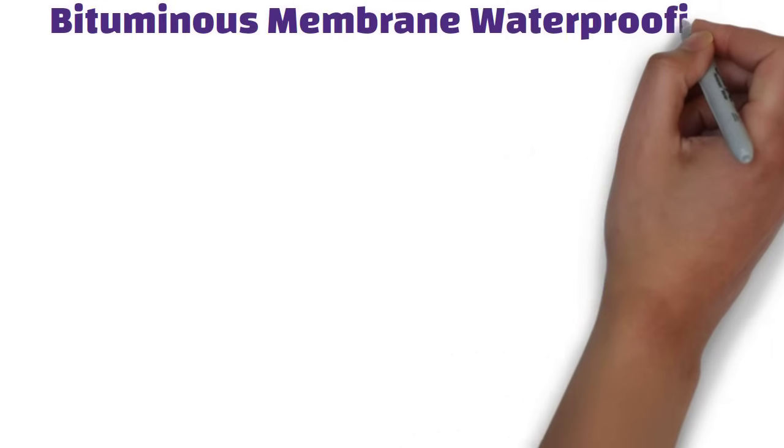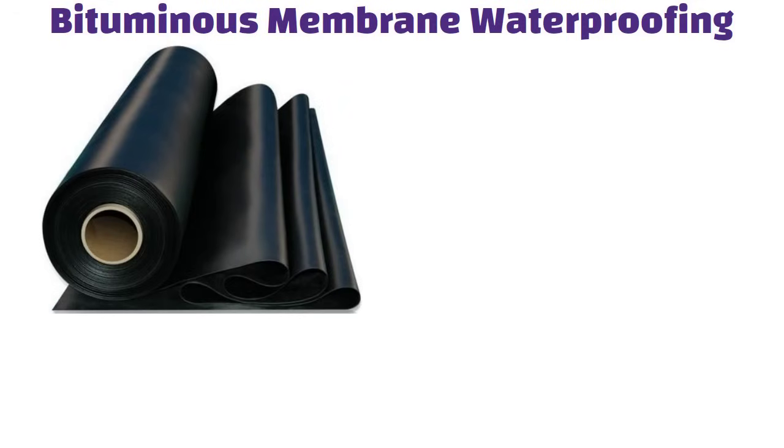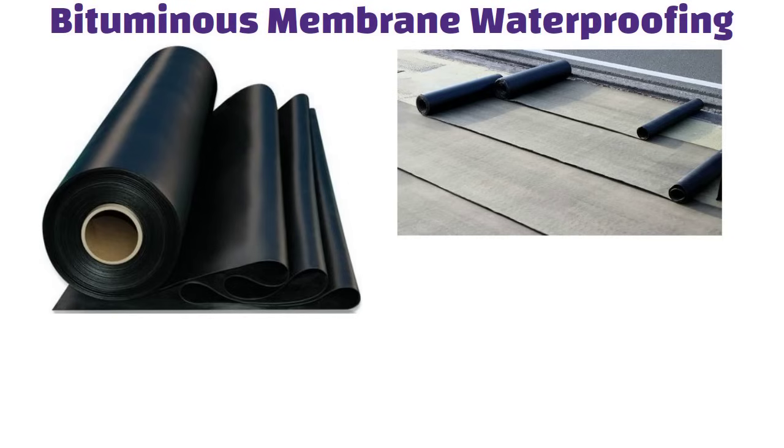Bituminous membrane waterproofing. These membranes come in roll forms. These are then unfurled and laid on a firm surface. These membranes have a thickness of 2 mm to 4 mm of waterproof materials and have an elongation of 150% to seal any and all cracks.